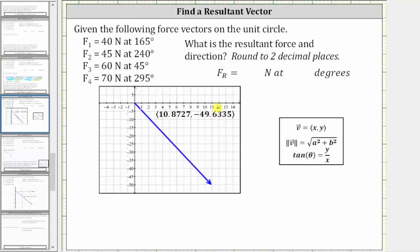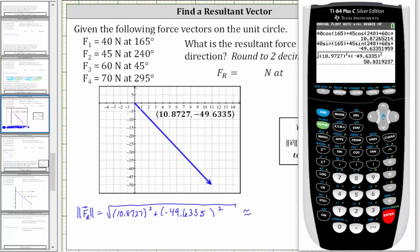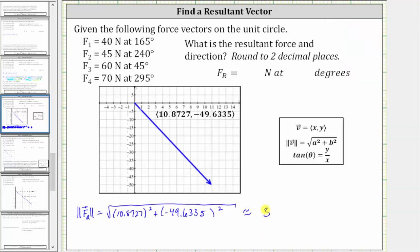This began by determining the resultant force by determining the magnitude of the resultant vector, which is equal to the square root of the square of 10.8727 plus the square of negative 49.6335. And now we'll go back to the calculator. To two decimal places, we round down to 50.83. So 50.83 is the resultant force in newtons.